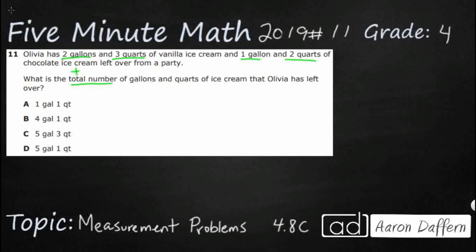I wonder if we could just add them up. We've got two gallons and three quarts, so we put QT, and then we've got one gallon and two quarts. I wonder what happens if we just do this—two and three is five quarts, and two and one is three gallons.